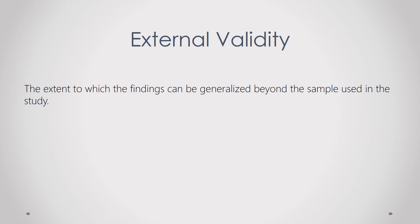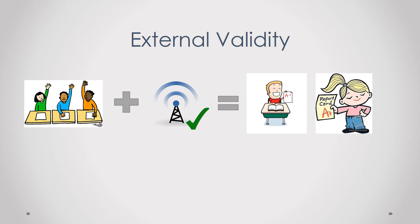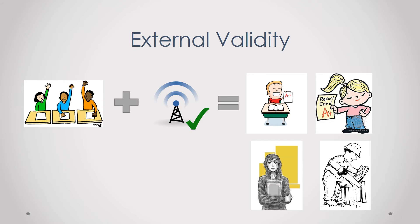External validity is the extent to which the findings can be generalized beyond the sample used in the study. Going back to the previous example, suppose we only tested young male students. Can we conclude that female students will also have an increase in participation if their internet connection improved? Can we include the same for older or working students? This is difficult to answer since we only tested young male students, so in this case external validity is low.